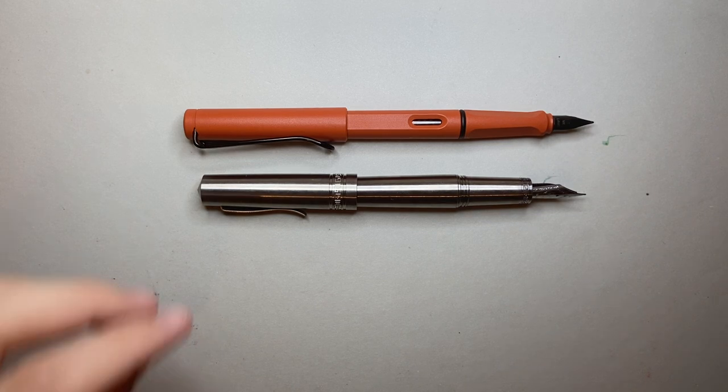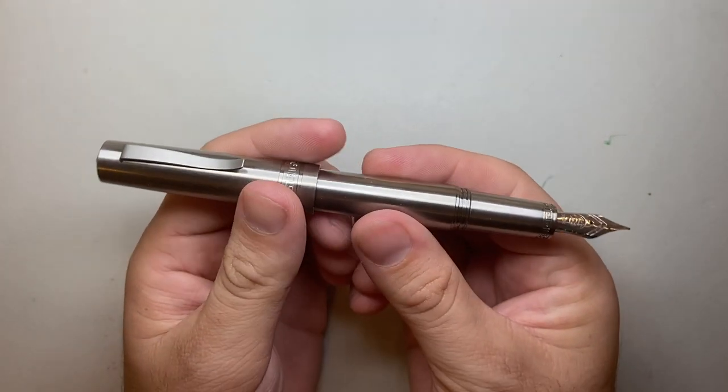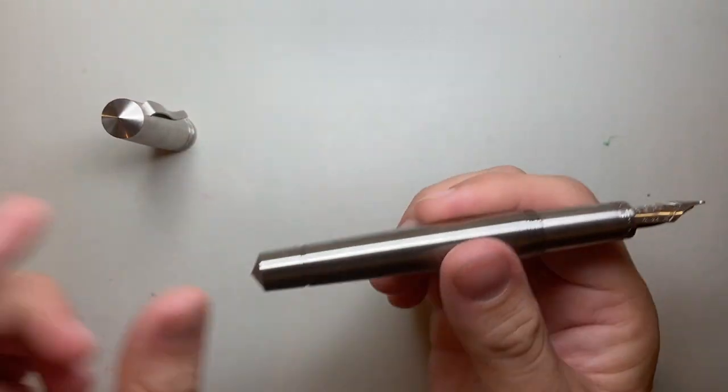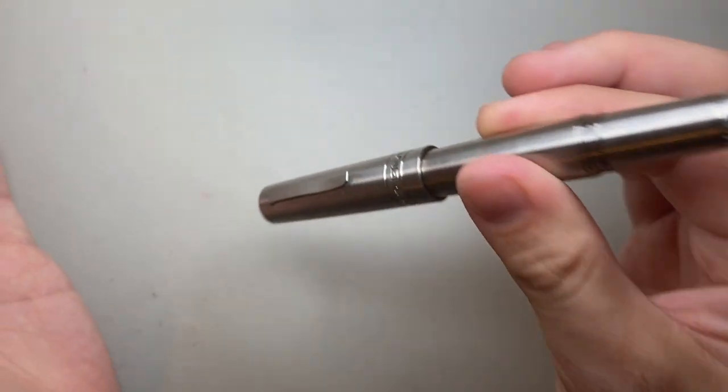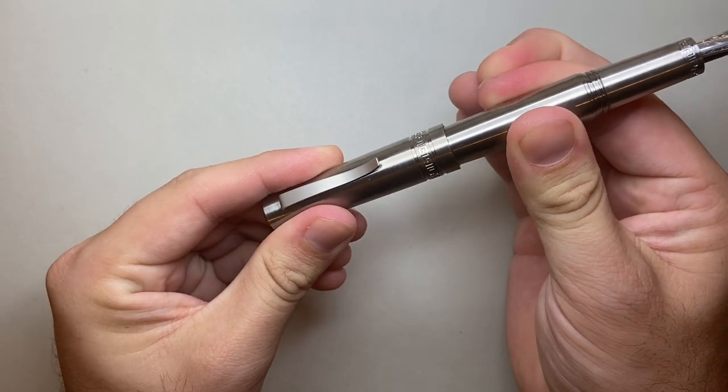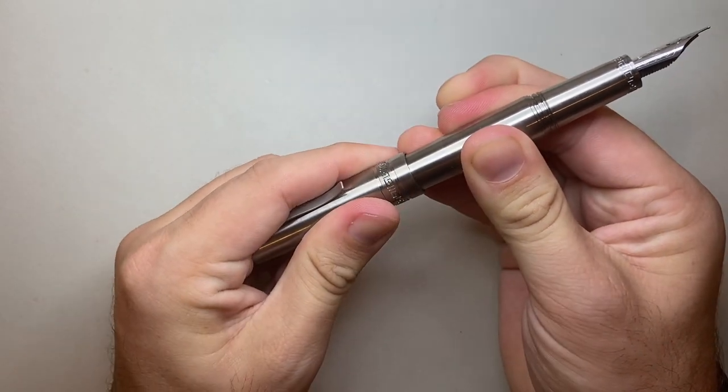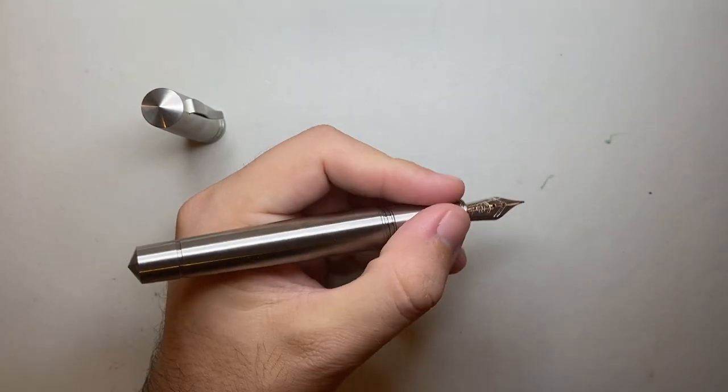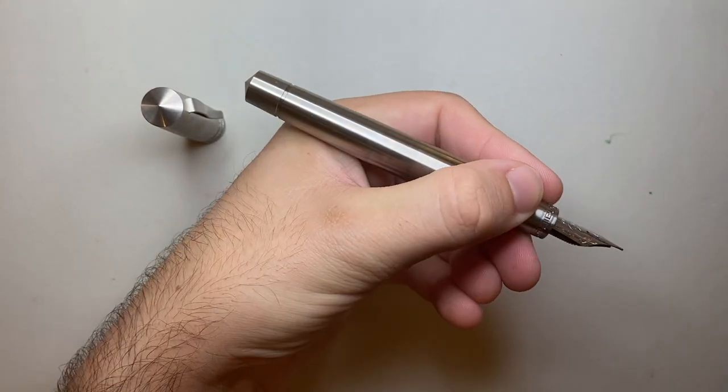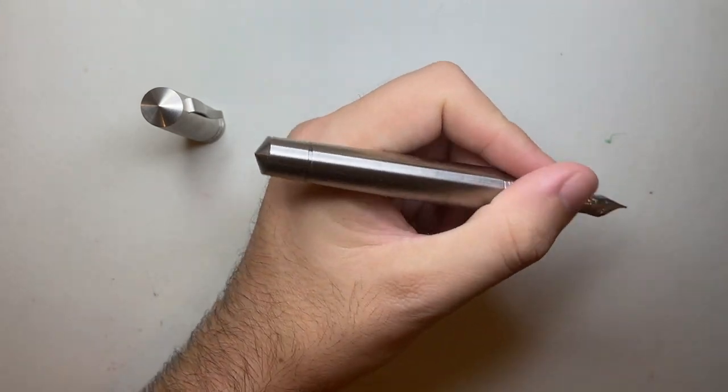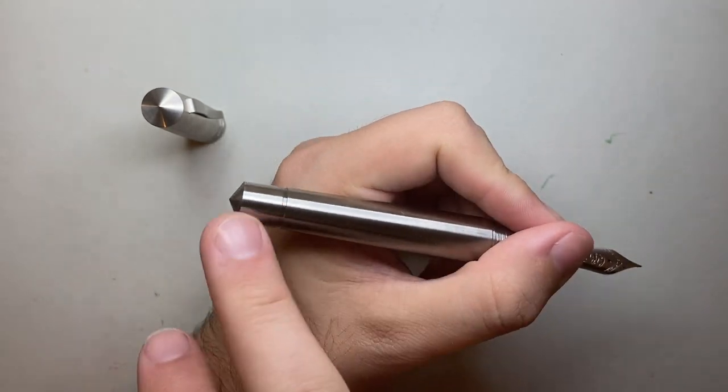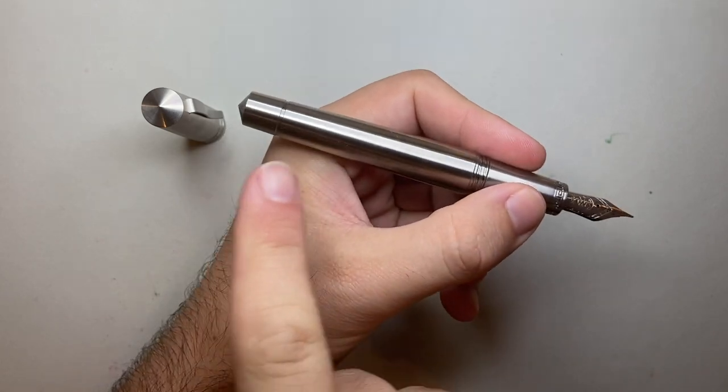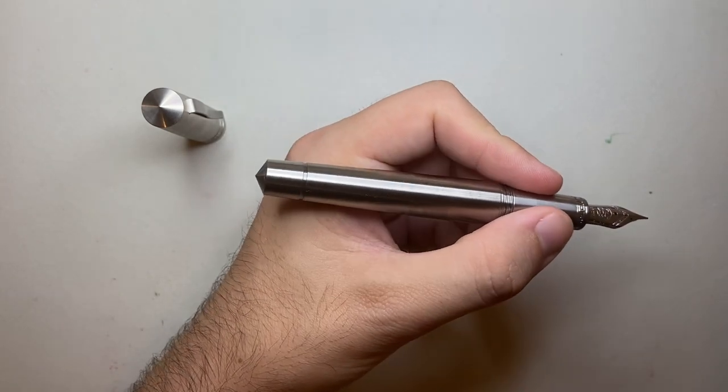There's a couple of things about this pen that make it a really good size in the hand. I write with this pen unposted. It does post relatively securely, it's not going to come off. I just think that the weight and the balance of the pen is actually better when it is unposted. I think it's long enough and there's nothing there to get in the way. It also means that the balance is nice and down on the front end of the pen.